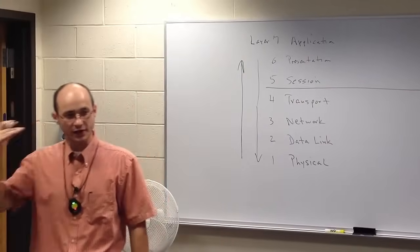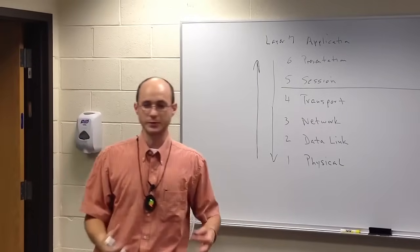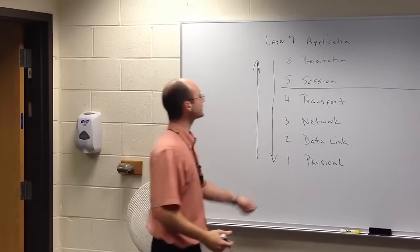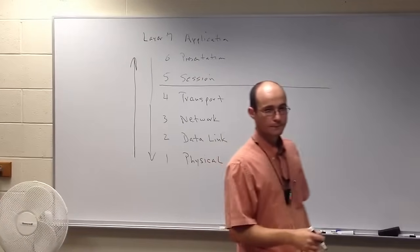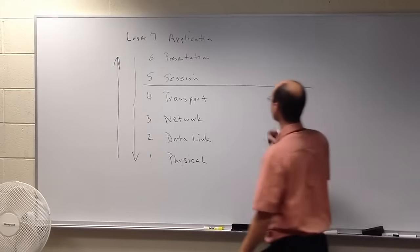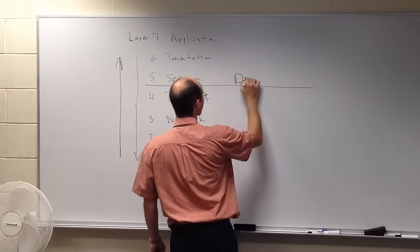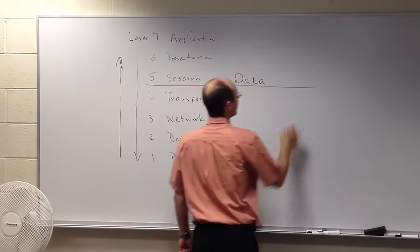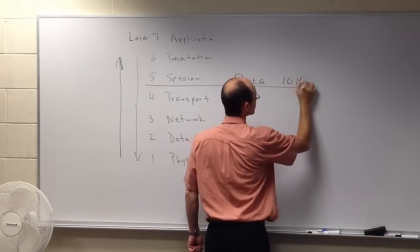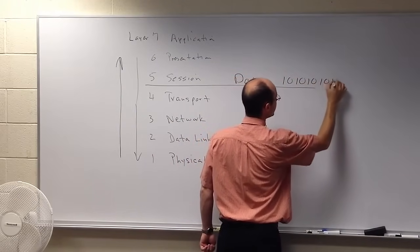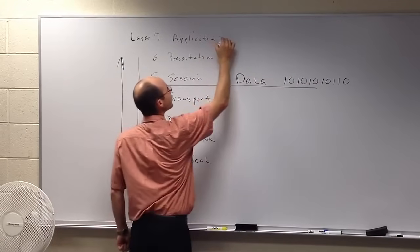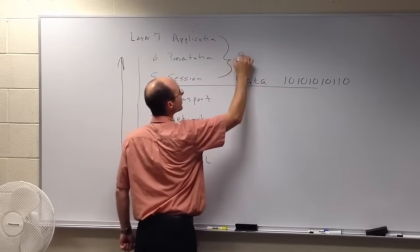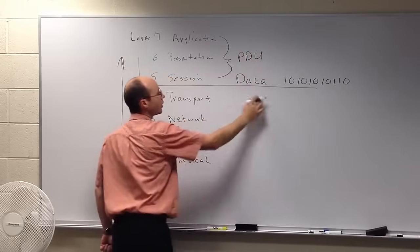Layer seven, layer six, and layer five can be grouped in. In fact, the sole responsibility for the three of these is to produce what for the transport layer? By the time we get down to the transport layer, the PDU should look something like this. It should be in a binary format. So, these three layers produce a PDU that we will call data.